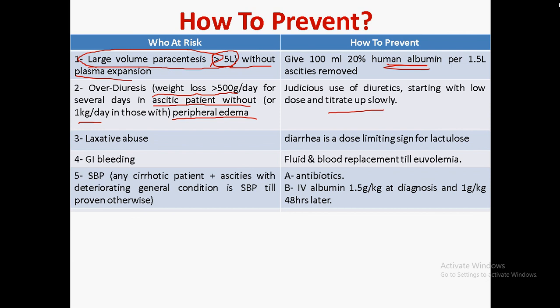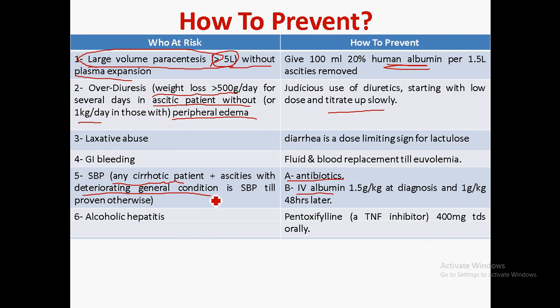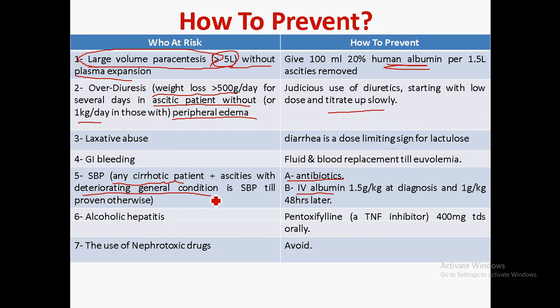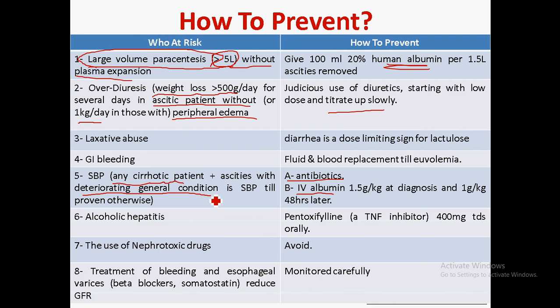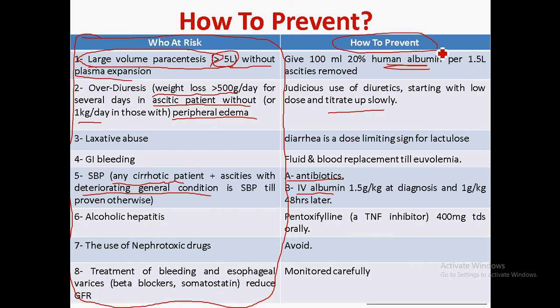GI bleeding requires rapid fluid and blood replacement. Spontaneous bacterial peritonitis in itself may precipitate hepatorenal syndrome and must be treated with antibiotics and intravenous albumin. Any patient with ascites and cirrhosis with deteriorating general condition should be treated with empiric antibiotics and intravenous albumin to prevent hepatorenal syndrome. Alcoholic hepatitis may precipitate hepatorenal syndrome and is treated with pentoxifylline. Avoid nephrotoxic drugs, treat bleeding esophageal varices, and monitor the patient carefully.